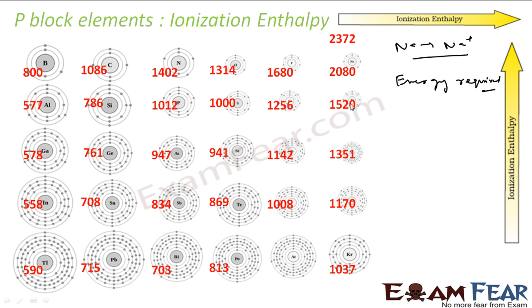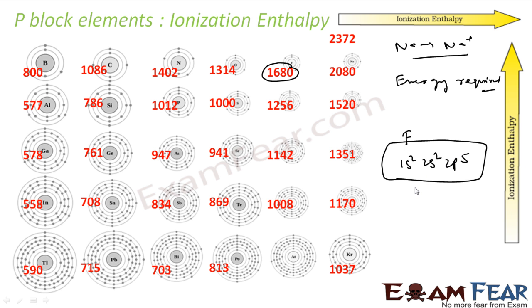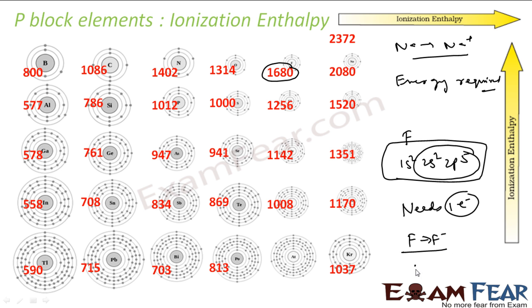Sodium, which is in the S-block, has a tendency to become Na+ easily because it's more stable, so less energy is required. But for fluorine, with configuration 1s² 2s² 2p⁵, the outermost shell has seven electrons, so it needs just one more electron to become stable. Fluorine to F⁻ is very easy, but if you ask fluorine to give an electron, it won't do it.